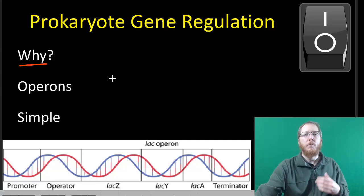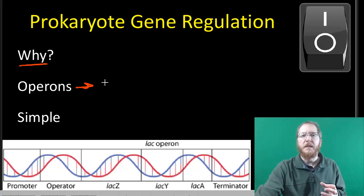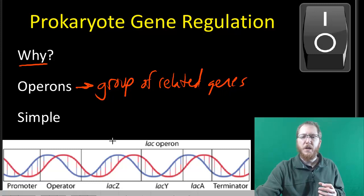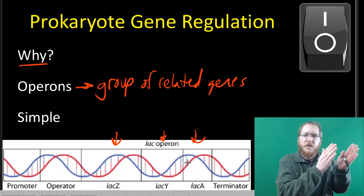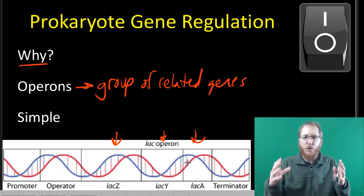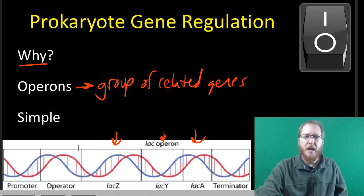The way prokaryotes control their genes in a simple way is by using operons. Operons are a group of related genes. In the case of the lac operon, shown here, that's the three enzymes needed to break down lactose sugar. Because several enzymes are needed for the entire digestive process, prokaryotes group them all together in one package and control the package as a whole.